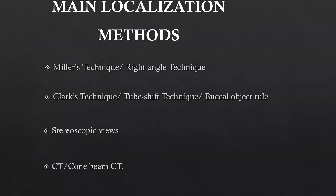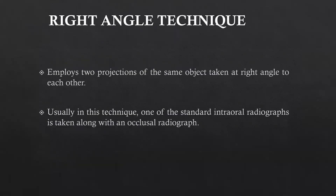There are many techniques of localization which include Miller's technique, also called the right angle technique. Then there is Clark's technique or the tube shift technique, the buccal object rule, stereoscopic views, and newer techniques like CT and cone beam CT. These give us an idea about a three-dimensional view of the object we are looking for.